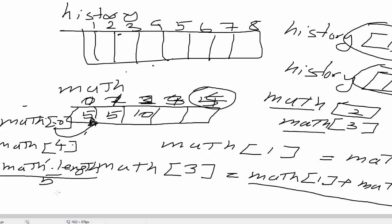Now, if I want to access the last element of the math array or shelf, I have to do minus one since I start from zero and the last index of this shelf is 4. So, math.length gives me 5 minus 1 is 4.